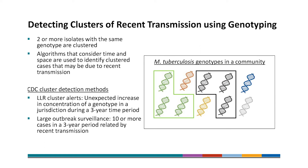CDC uses M-tuberculosis genotyping data to detect clusters of possible recent transmission. Two or more isolates with the same genotype are considered clustered. This schematic on the right is showing M-tuberculosis genotypes in a community, and we can identify a green cluster and a black cluster. Algorithms that consider time and space are then used to identify clustered cases that may be due to recent transmission, and CDC has developed cluster detection methods for this purpose. One method is the LLR cluster alert that detects an unexpected increase in concentration of a genotype in a jurisdiction during a three-year time period. Another type of alert is for surveillance of large outbreaks, defined as 10 or more cases in a three-year period related by recent transmission.